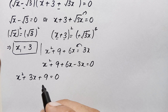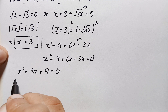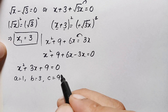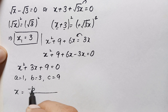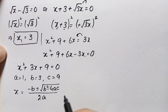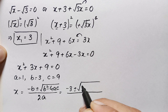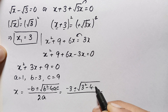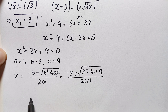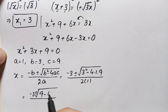The values are a = 1, b = 3, and c = 9. The quadratic formula is x = (−b ± √(b² − 4ac)) / (2a). Substituting: x = (−3 ± √(9 − 4·1·9)) / 2, which simplifies to x = (−3 ± √(9 − 36)) / 2.